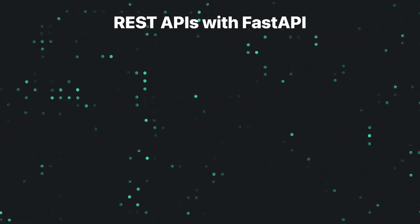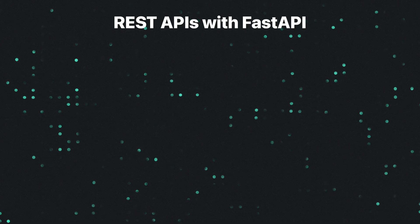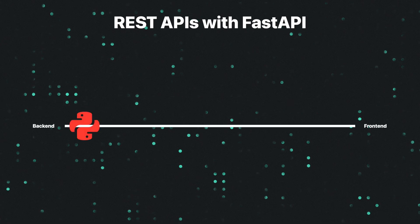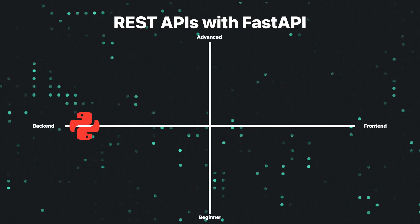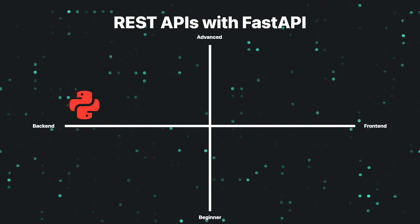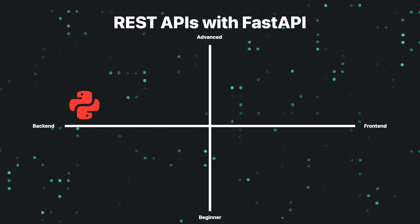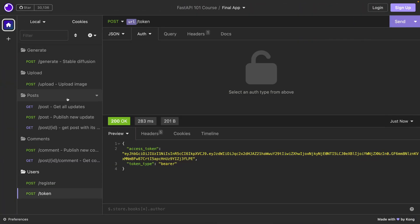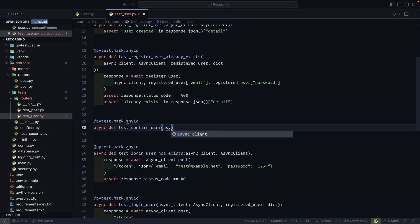The new course is all about REST API development with FastAPI. It's focused purely on the back-end side of things and is aimed at intermediate Python developers who want to get to know FastAPI. During the course we build a social media API with 100% test coverage using PyTest. We'll cover user authentication, email confirmations, file uploads, background tasks, and deploying your API.